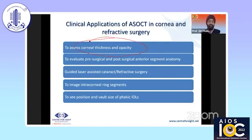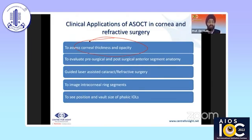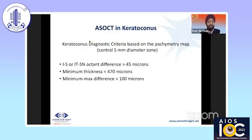The best thing in refractive surgery is that OCT helps you assess corneal thickness. A lot of people don't have a topographer system that gives them corneal thickness, so they use an OCT for that and to see if there are opacities. It helps evaluate pre-surgical and post-surgical anterior segment anatomy, laser-assisted cataract and refractive surgery, intracorneal ring segments, phakic IOLs, position of IOL post-operatively, and malignant glaucoma, among other things.